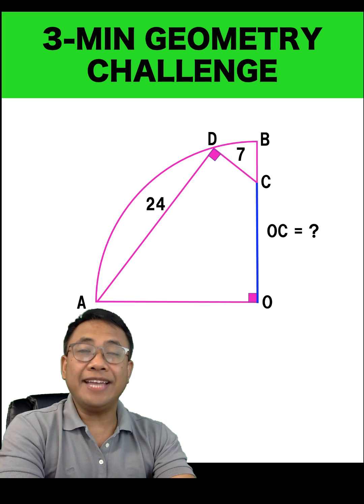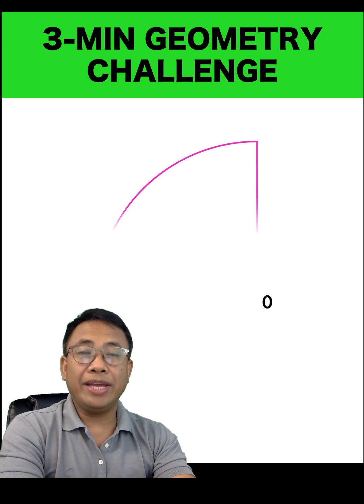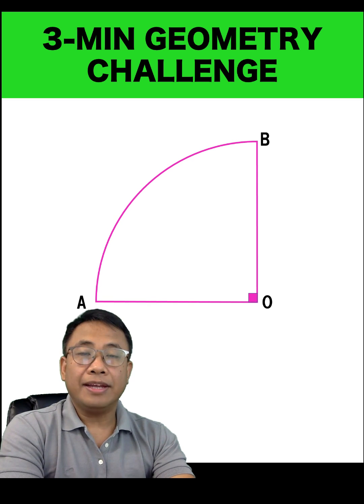Hi guys, Lando Assistant here, and here is our math problem for today. Let's begin with a quarter circle O, with radii OA and OB.